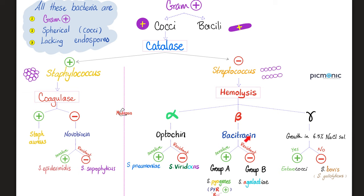Not killed by bacitracin? You are Group B beta-hemolytic streptococcus, such as Streptococcus agalactiae. If no hemolysis whatsoever, the next question is: can you grow on 6.5% salt solution? Yes — Enterococcus. No — Streptococcus bovis, that's the old name. The new name is Streptococcus gallolyticus.